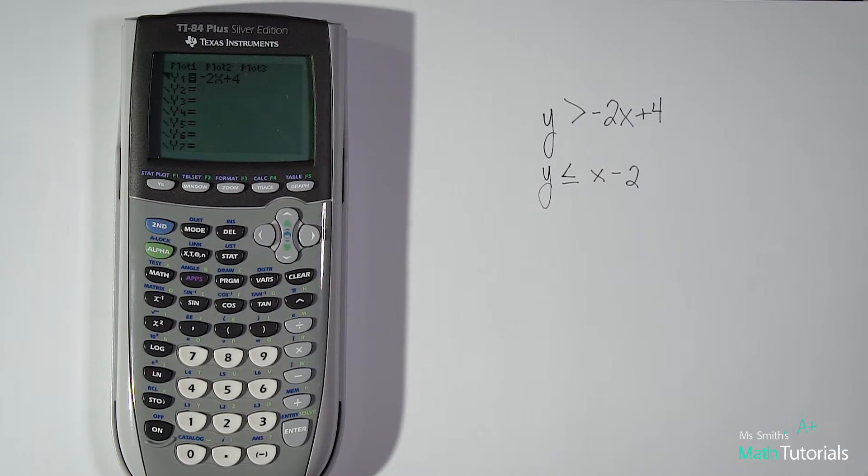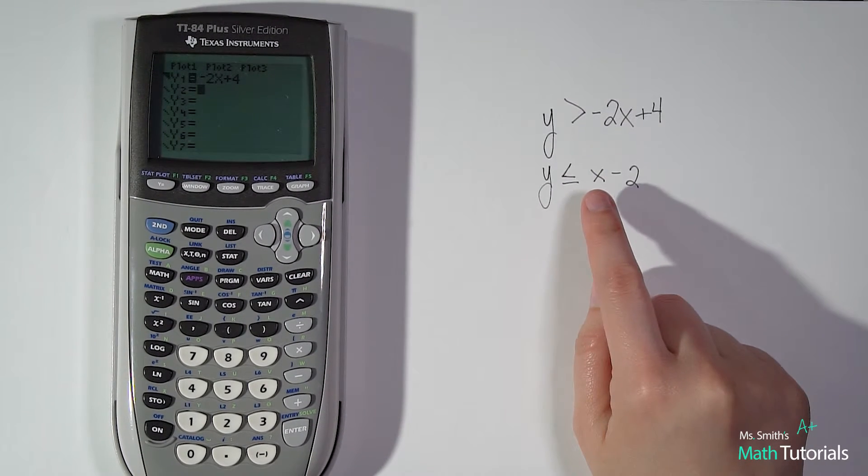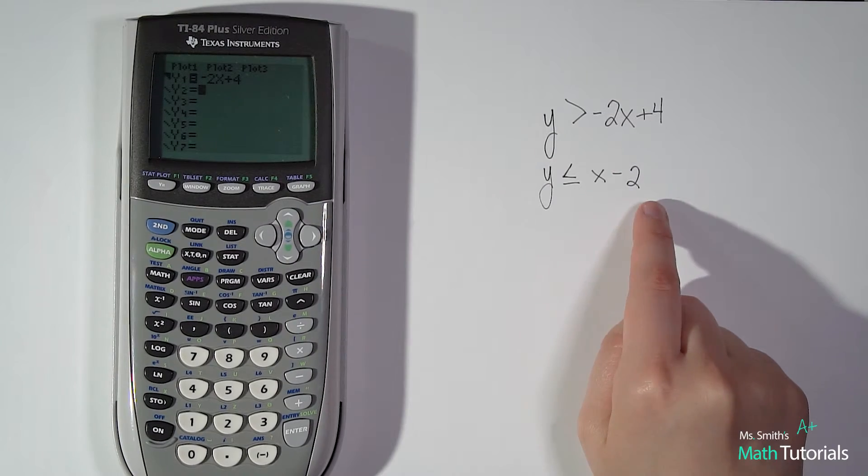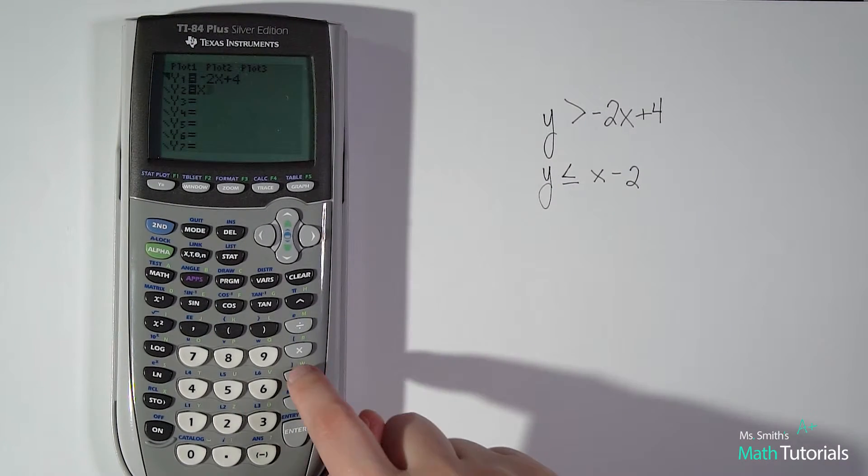Okay, but there's my first equation. I want to scroll down to the next line so I can put in my second equation. Or inequality I should say. X minus 2. X minus 2.